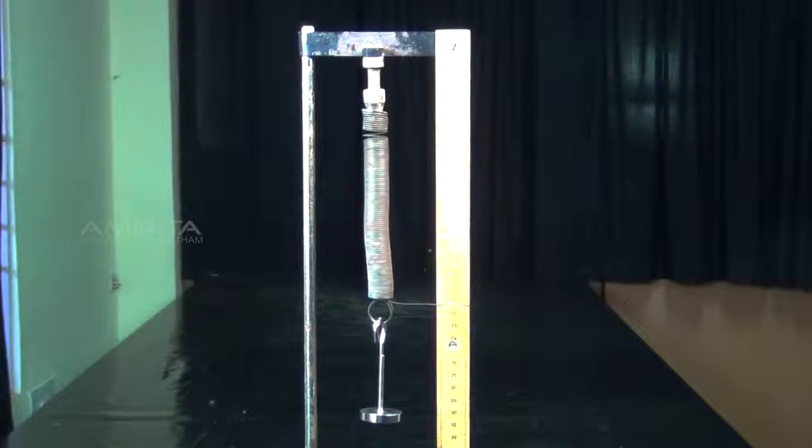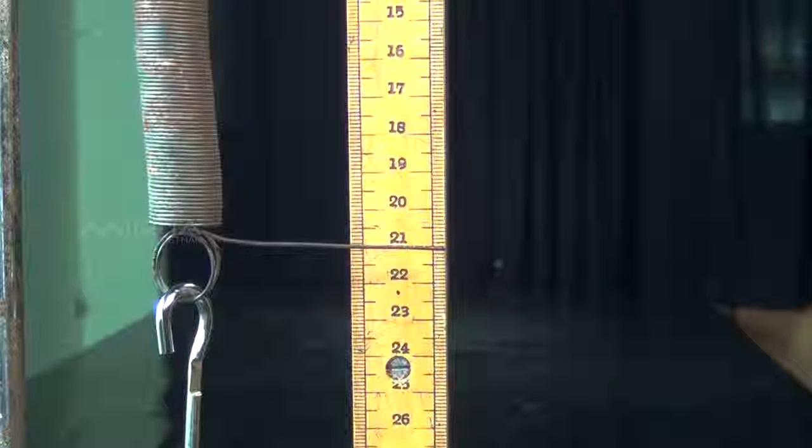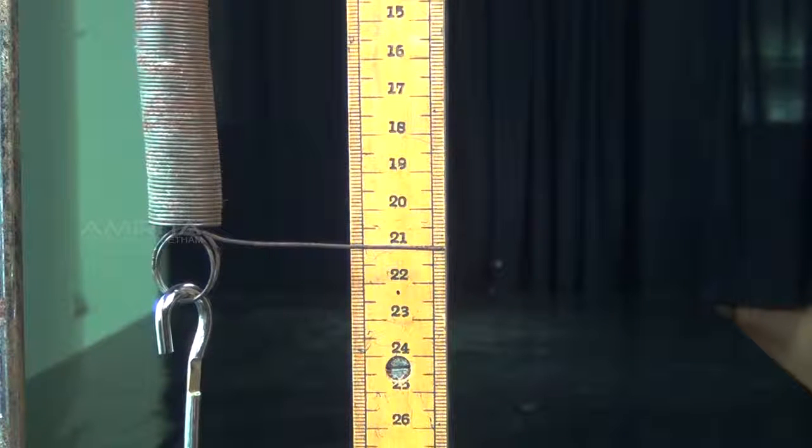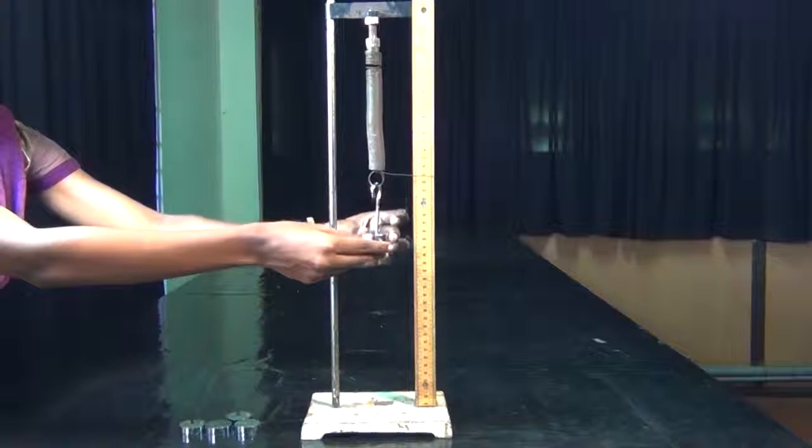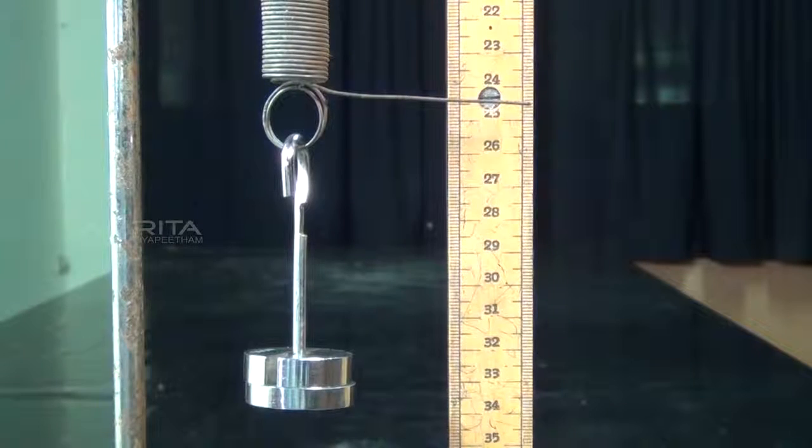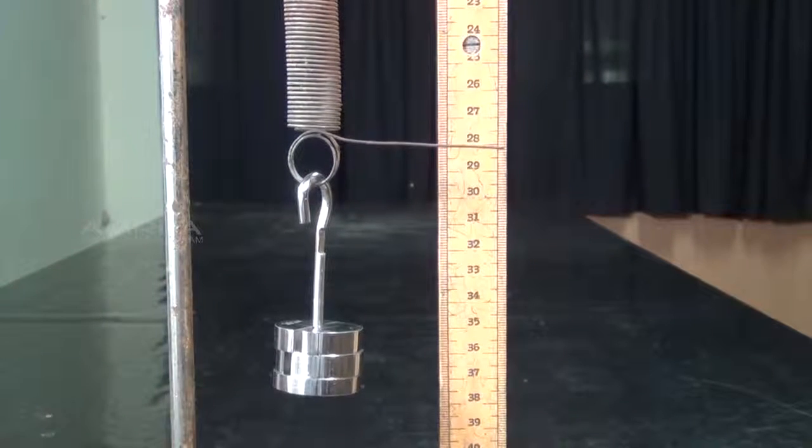With the weight hanger alone attached to the spring, the reading of the pointer on the scale is noted. Slotted weights are added one by one to the weight hanger each time noting the scale readings.